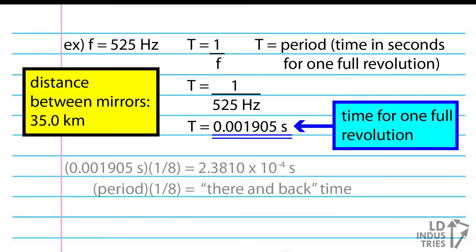So we'll take our period and multiply it by 1 eighth to get a time of 2.3810 times 10 to the negative 4 seconds. This is sort of our there and back time.